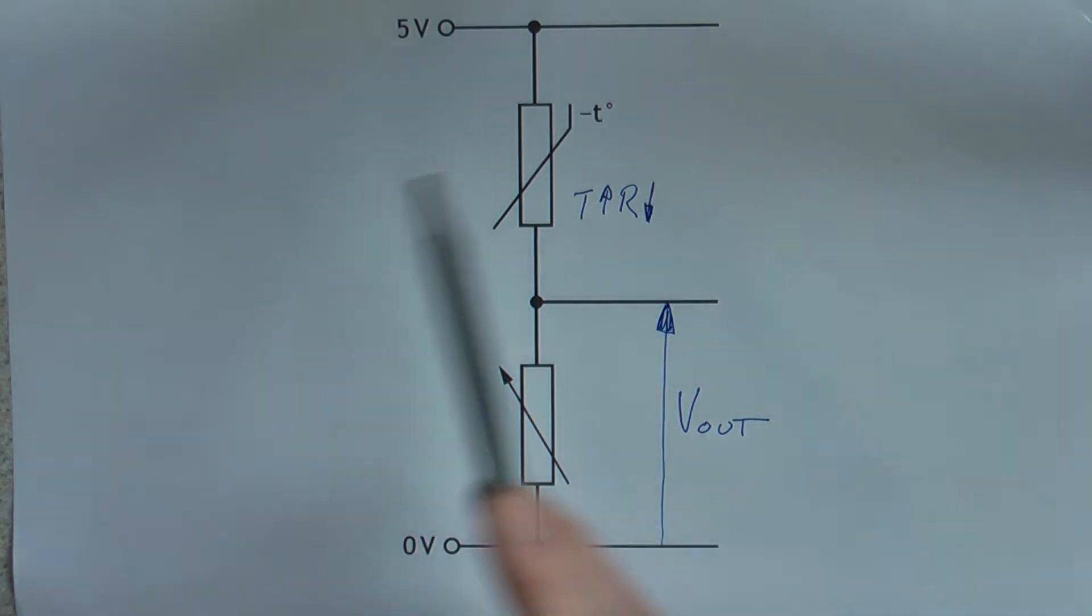The exciting part about the voltage divider is this V_out. That is the voltage that is then passed on to be processed by another part of the circuit. So we need to know how that voltage changes.